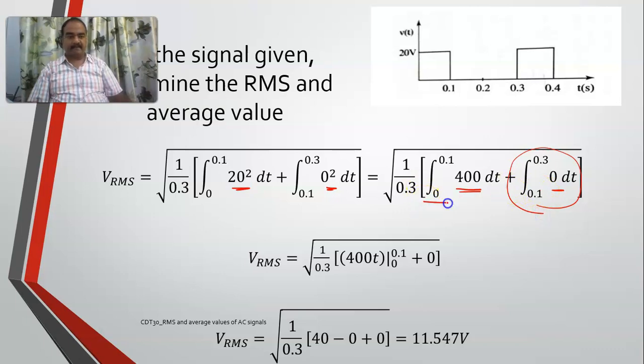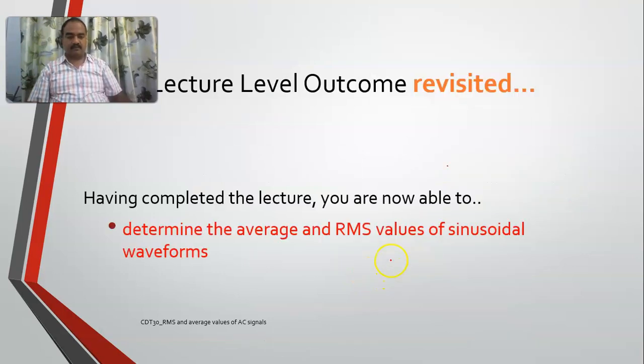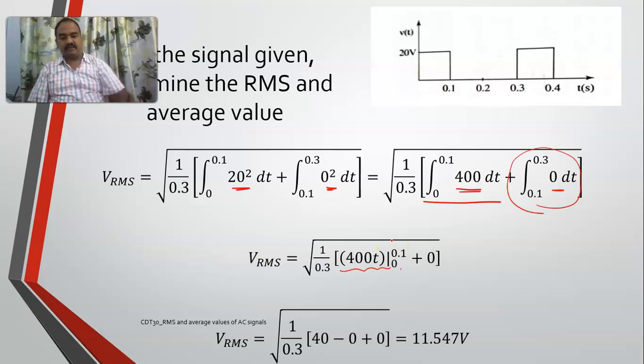But here, this is 400t, where t is varying from 0 to 0.1. Now if I substitute the values, 400 into 0.1 is 40, 400 into 0 is 0. If I solve this one, 40 by 0.3, it is 11.547.